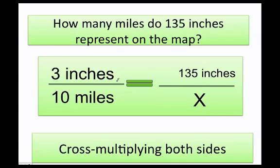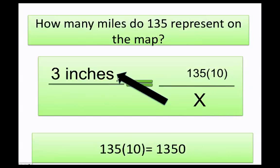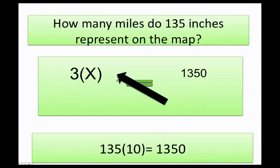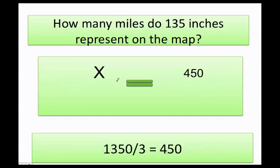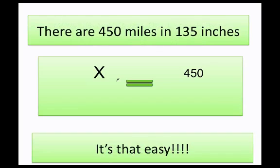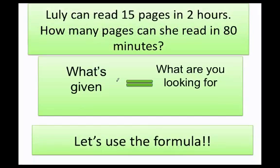Now I can go ahead and cross multiply: ten times 135 and then three times x. Finally, I can go ahead and divide both sides by three, and my answer is going to be 450. Well, there are 450 miles in 135 inches. This is in this map of the problem that we just solved. Perfect.